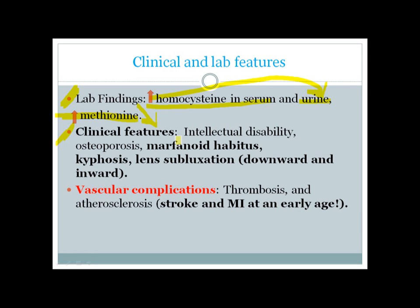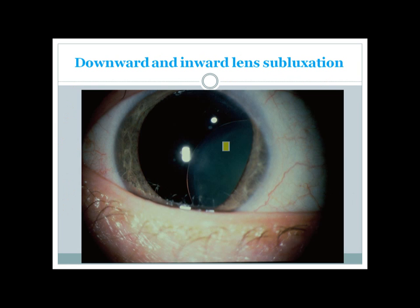Clinical features include intellectual disability due to elevated serum homocysteine, osteoporosis, and Marfanoid habitus with long fingers, kyphosis, and lens subluxation — which is downward and inward. This distinguishes it from Marfan syndrome, where lens subluxation is upward and sometimes lateral. Importantly, patients can develop vascular complications such as thrombosis and atherosclerosis, leading to stroke, MI, or renal vein thrombosis at a very early age. Here you can see a patient with downward and inward subluxation of the lens.